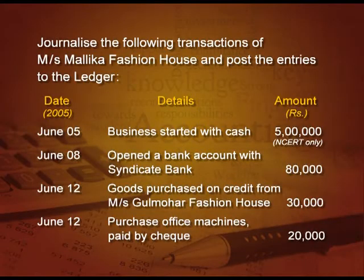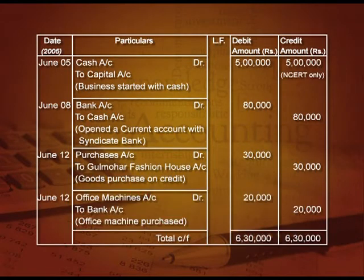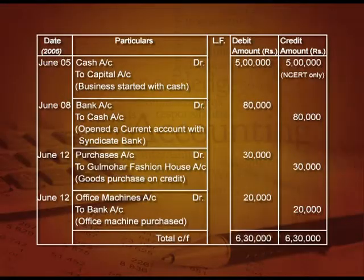Next: purchase office machine by cheque 20,000. The entry will be office machine account debit 20,000 to bank account 20,000. So in the office machine account we will write 'To Bank 20,000', and in the bank account we will write 'By Office Machine 20,000'.